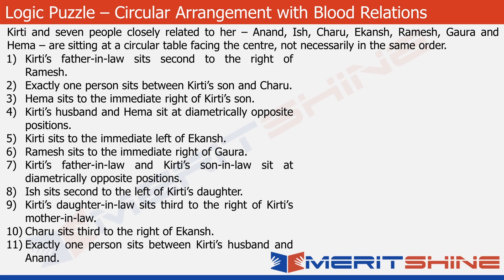The question we are going to discuss here is a circular arrangement problem with blood relations. It's about a family of 8 people. All these people are sitting at a circular table, all of them facing the center of the table. All these people are connected to this one person, Kirti. So all the relations are given in connection to Kirti only. This type is generally easier to handle in blood relations.